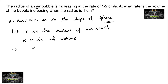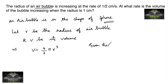The volume of a sphere is V = 4/3 π r³. It is given that the radius is increasing, so dr/dt = 1/2 centimeter per second. We have to find dv/dt.